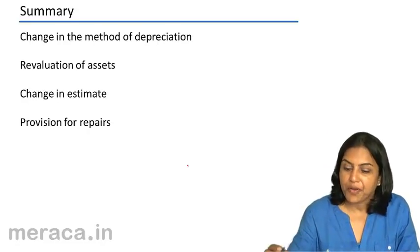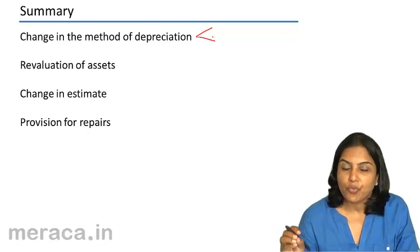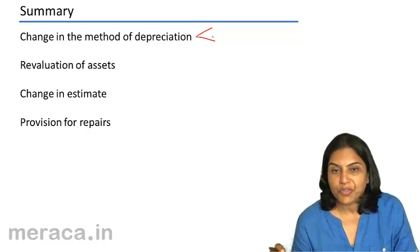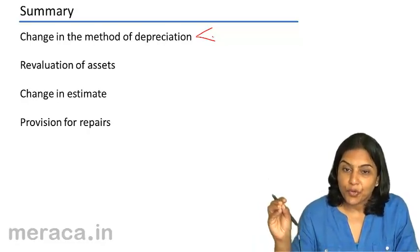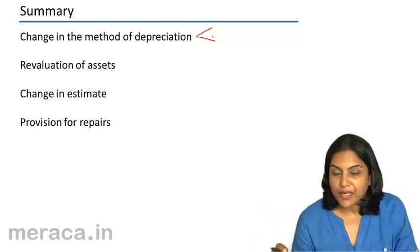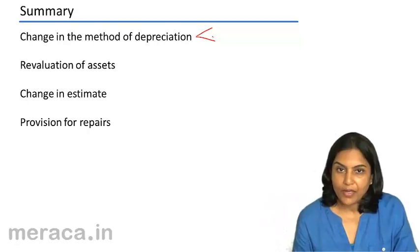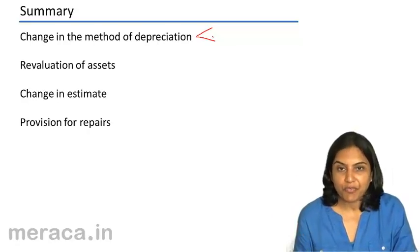If a method is changed, we need to compute the actual written down value, the book value of the asset under the new method had the method been applied from year 1 with retrospective effect.